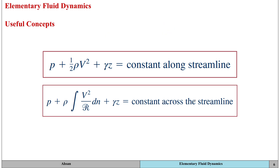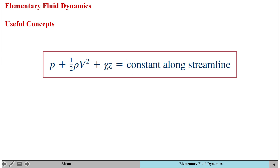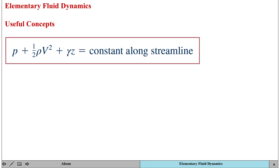A couple of important concepts to note: each term in Bernoulli's equation has the dimension of force per unit area, i.e., Newtons per meter squared. The first term, pressure, is the actual thermodynamic pressure of the fluid — it is the pressure you would look up in thermodynamic tables.